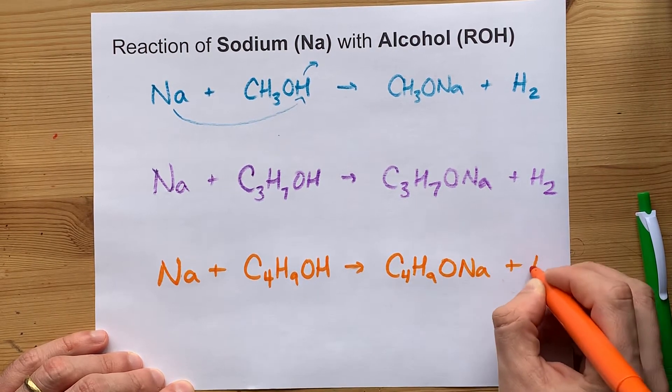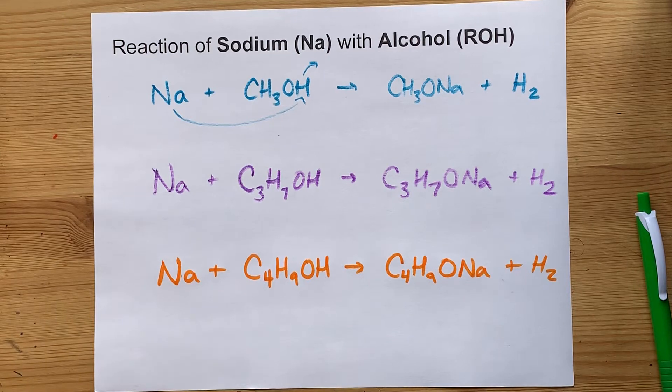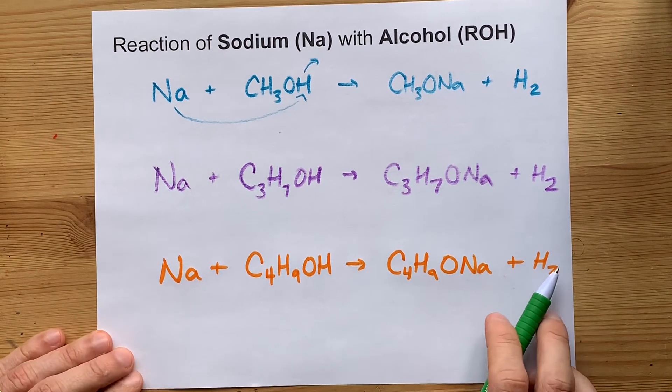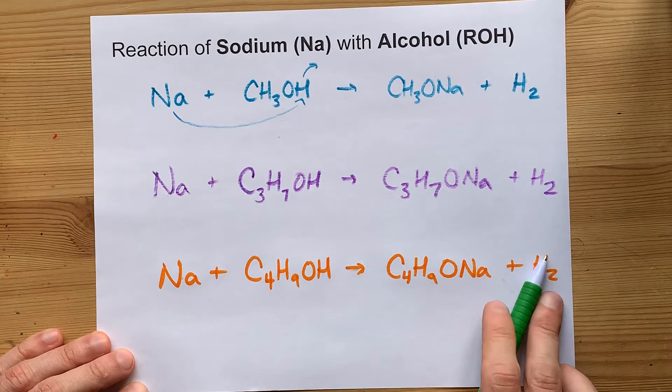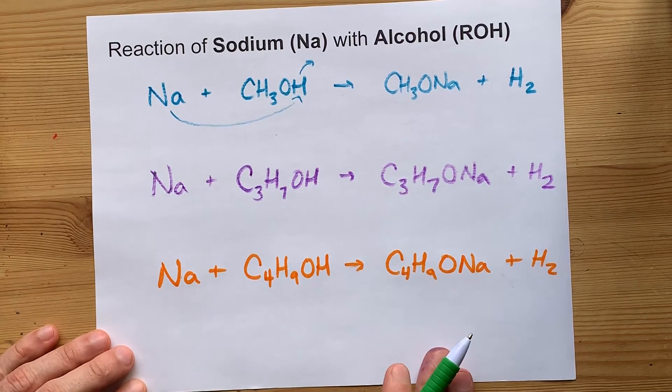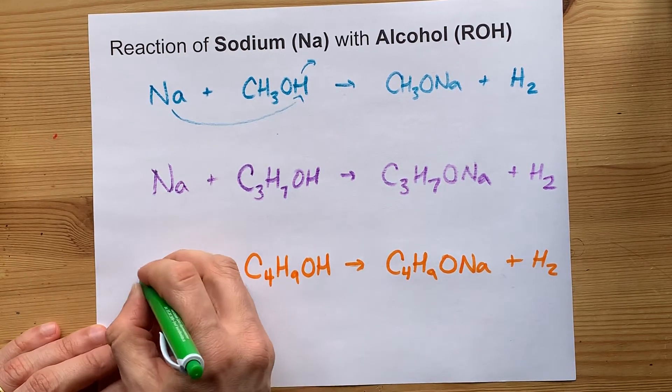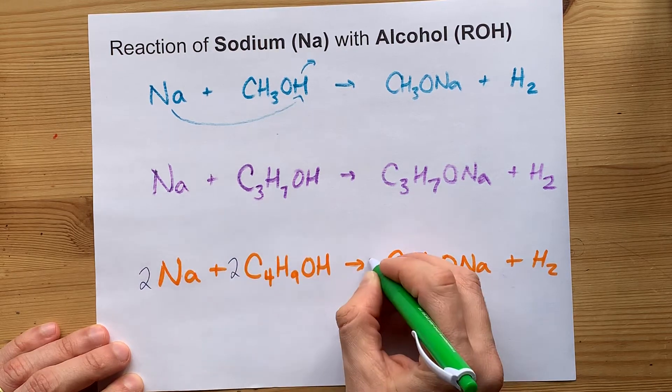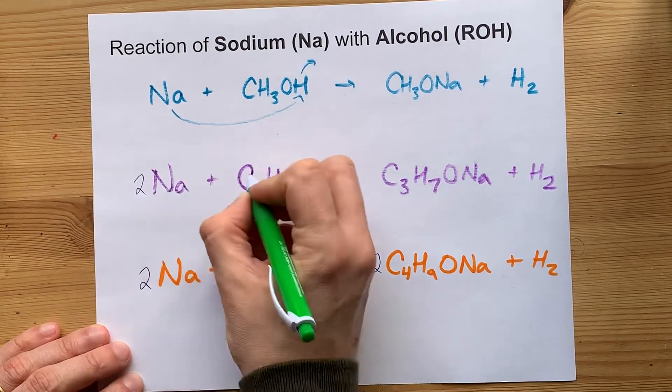C4H9ONa and then hydrogen gas given off in the end. Because you are getting gaseous diatomic hydrogen as a product, it means you need two of these reactions happening each time you want to get one of those out.